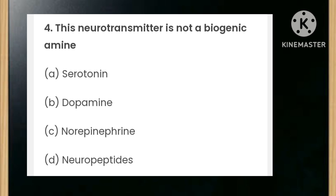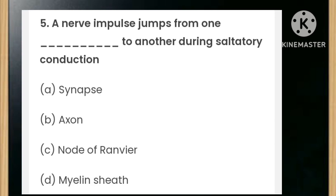This neurotransmitter is not a biogenic amine: serotonin, dopamine, norepinephrine, or neuropeptides? The answer is neuropeptides. A nerve impulse jumps from one blank to another during saltatory conduction — the options are synapse, axon, node of Ranvier, or myelin sheath. The answer is node of Ranvier.